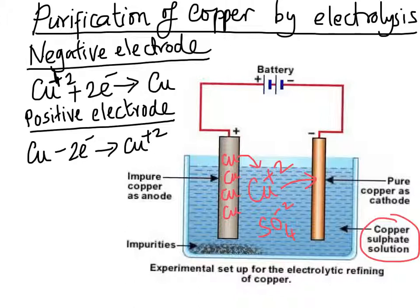Regarding the electrode equations: at the negative electrode, copper ions gain two electrons to become copper metal — Cu²⁺ + 2e⁻ → Cu. At the positive electrode, copper metal loses two electrons to become copper ions — Cu → Cu²⁺ + 2e⁻ — dissolving from the impure copper rod into the solution.